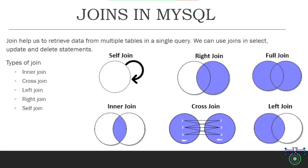What are the types of joins we have? We have inner join, cross join, left join, right join, and self join. We will see each with examples. You can see the Venn diagram here. In self-join, it doesn't require multiple tables — with the same one table, you can get the result. You probably have to write the statement to figure out how you can do self-join.